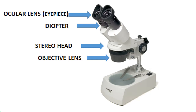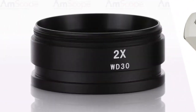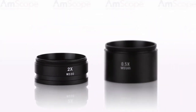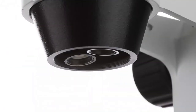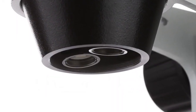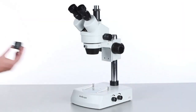Stereomicroscopes have two separate objectives, each one connecting to one of the eyepieces. The eyepieces and objective lenses collectively determine the magnification of the microscope. They can have a fixed single objective, a rotating multiple lens turret, or a zoom, and it allows you to change the magnification levels depending on the application.